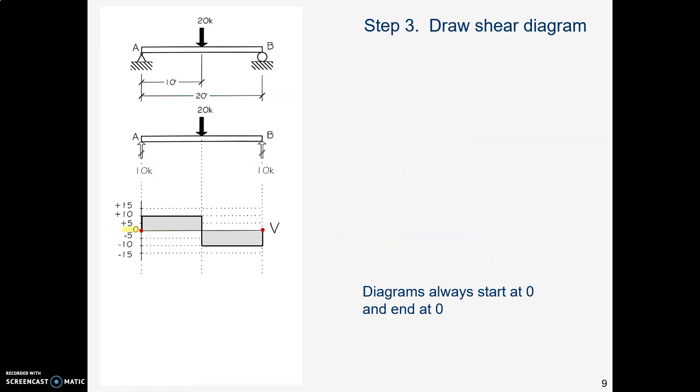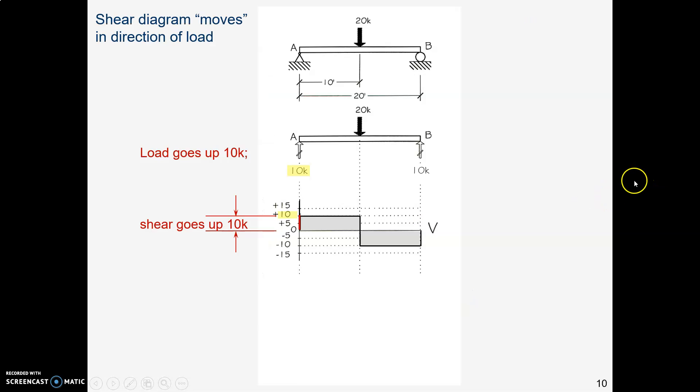Under the load diagram, we draw the vertical shear diagram. They're always labeled V. V stands for vertical shear. One thing to notice about shear and moment diagrams is they always start at zero, and they always end at zero. We don't need to do calculations because we're using the graphical method. The shear diagram just matches what the load diagram is doing. If the load pushes up 10k, that's 10,000 pounds, the shear diagram jumps up 10k.